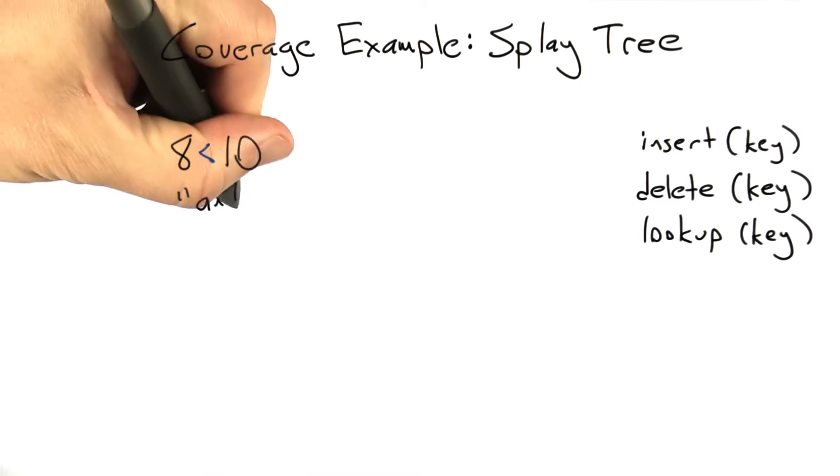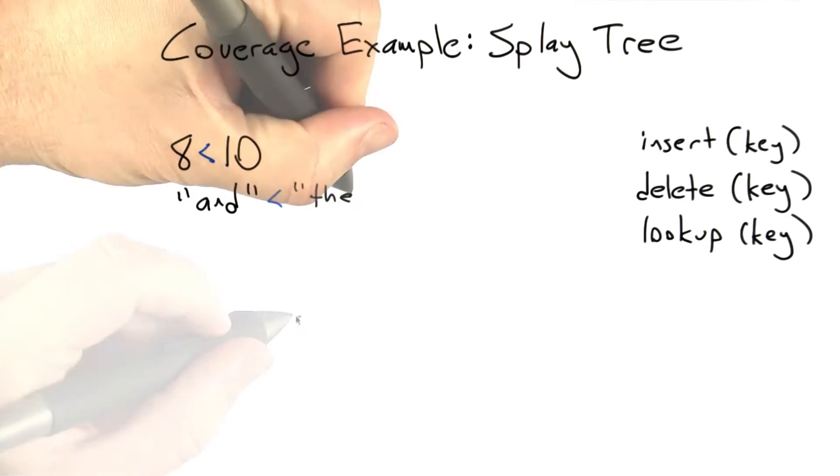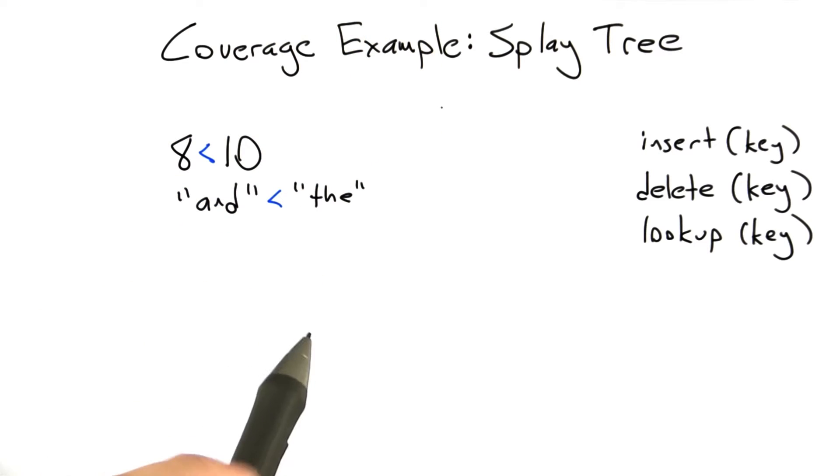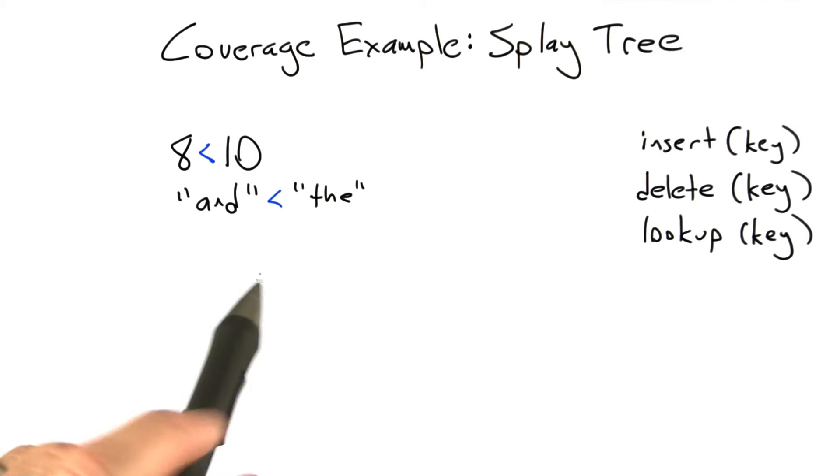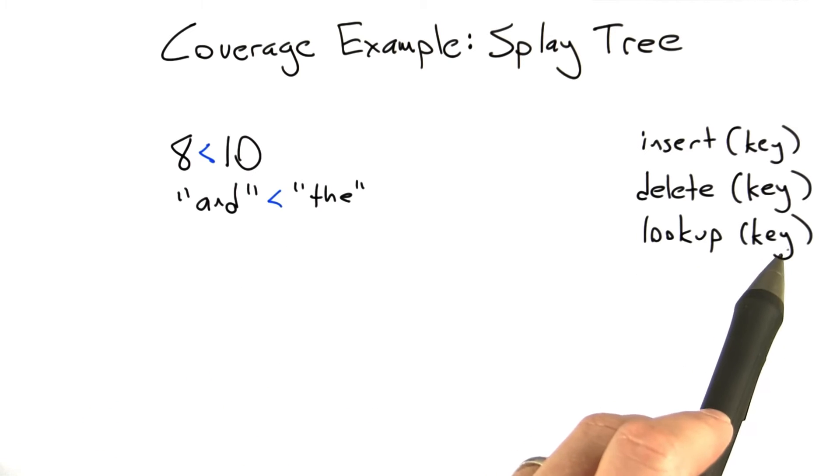Or, for example, if we're using words as our keys, then we can use dictionary order. And so again, it doesn't matter what kind of data type the key is in a binary search tree. All that really matters is the keys we're going to use to lookup elements in the tree have this ordering relation.